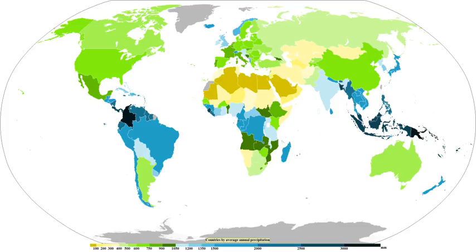The humid subtropical climate zone is where winter rainfall and sometimes snowfall is associated with large storms that the westerlies steer from west to east. Most summer rainfall occurs during thunderstorms and from occasional tropical cyclones. Humid subtropical climates lie on the east side of continents, roughly between latitudes 20° and 40° away from the equator. An oceanic or maritime climate is typically found along the west coasts at middle latitudes of all the world's continents, bordering cool oceans, as well as southeastern Australia, and is accompanied by plentiful precipitation year-round.